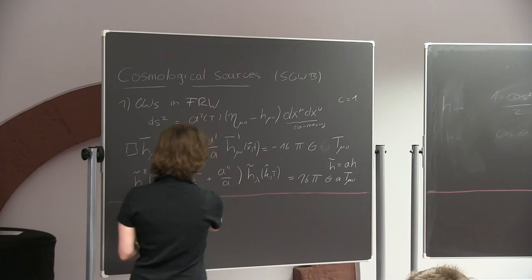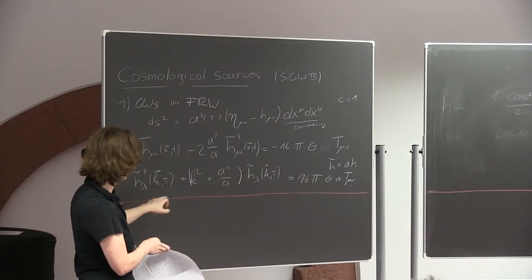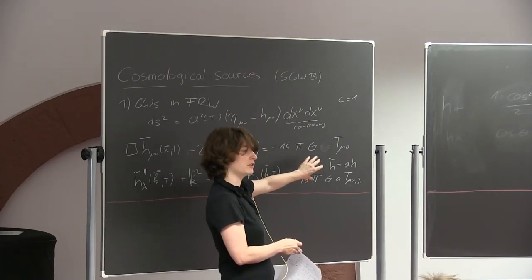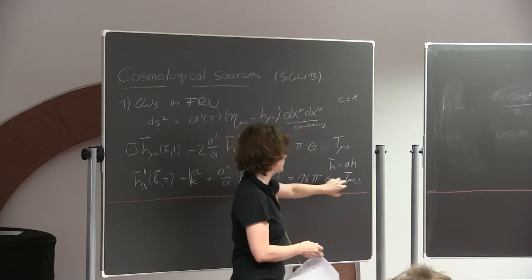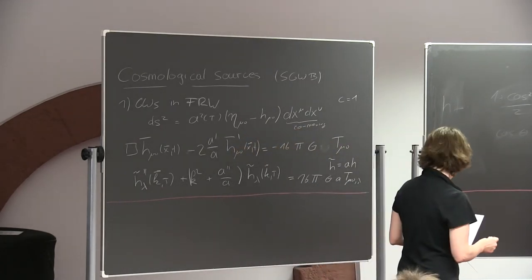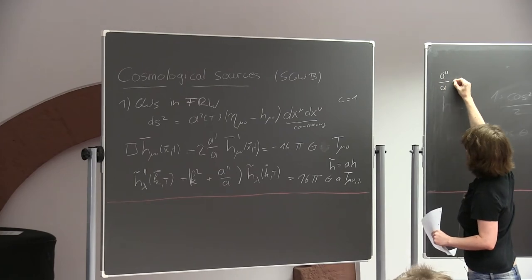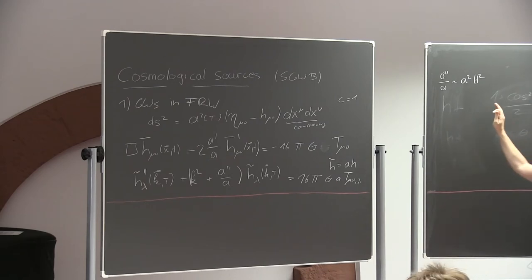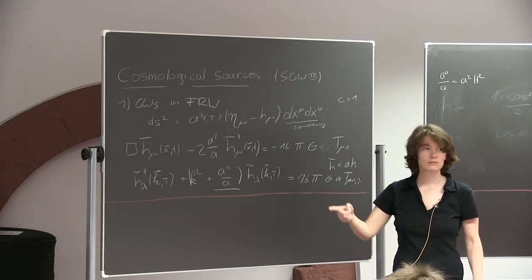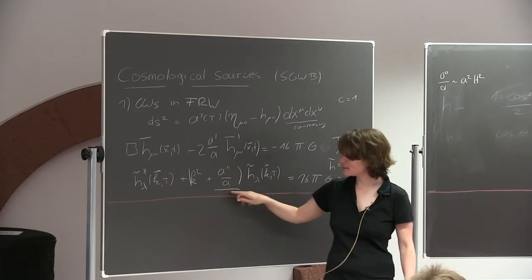We only need our two polarizations, plus and cross, denoted by lambda. Using the Friedmann equations, A''/A is roughly given by A²H². The new term in the equation is A''/A, which comes from the expansion of the universe. What matters is whether k is larger or smaller than AH.